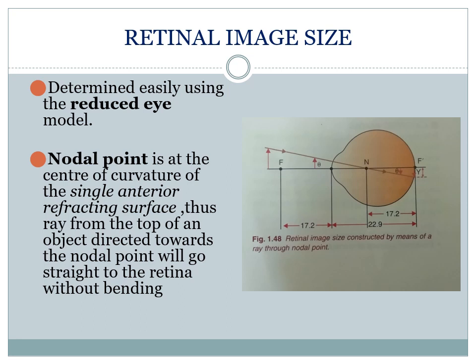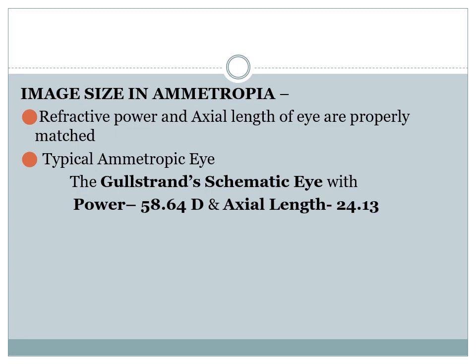Retinal image size is easily determined using the reduced eye model, where the nodal point is at the center of curvature of the single anterior refractive surface. A ray from the top of an object directed towards the nodal point passes straight through to the retina without bending, forming an inverted image. Image size in ametropia — that is, in cases of refractive errors — is determined by both the refractive power and axial length of the eye.